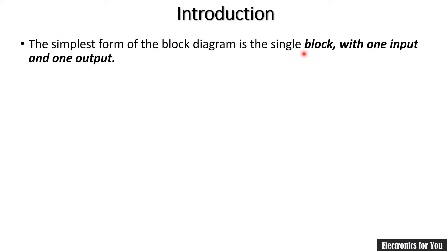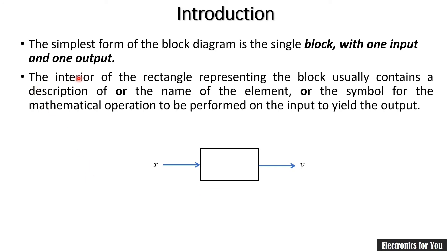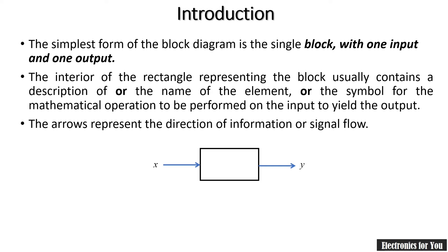The simplest form of the block diagram is a single block with one input and one output. This is our block and it is having x as an input and y as an output. This rectangle representing the block usually consists of the description of the system, the name of the element, or the symbol for the mathematical operation. The arrow represents the direction of information or signal flow — the signal x going in is the input and y going out is the output.